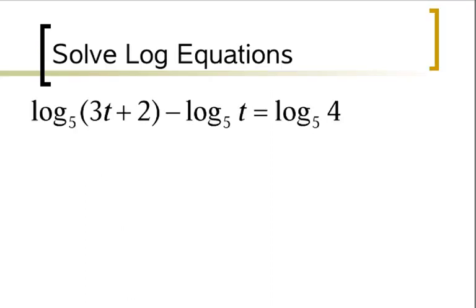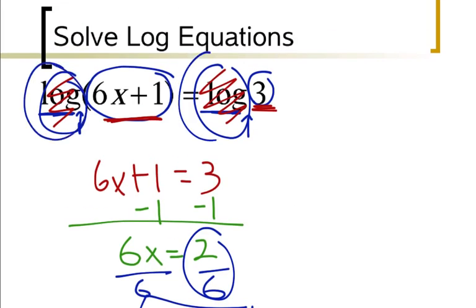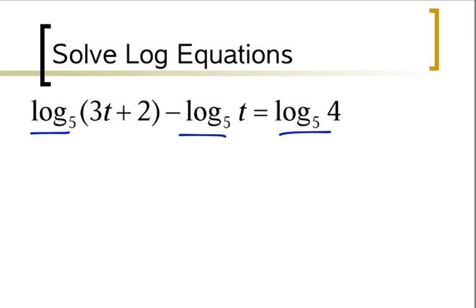Sometimes it gets a little more complicated, where I've got 3 different logs. I can't just drop all the logs, although we might want to. I'm going to drop the logs, but I can only drop the logs when I have it written like this, where it's just 1 log on both sides. We've learned in previous lessons that we can actually take multiple logs and rewrite them as 1.